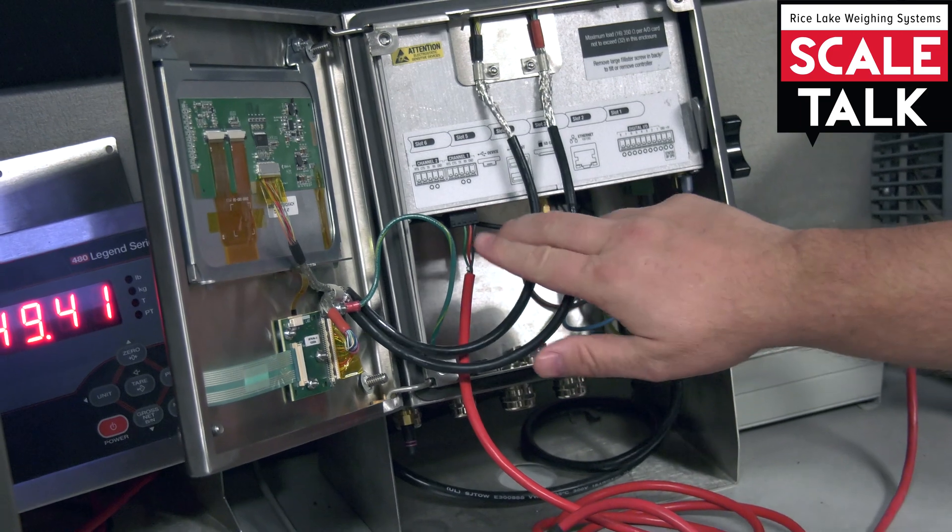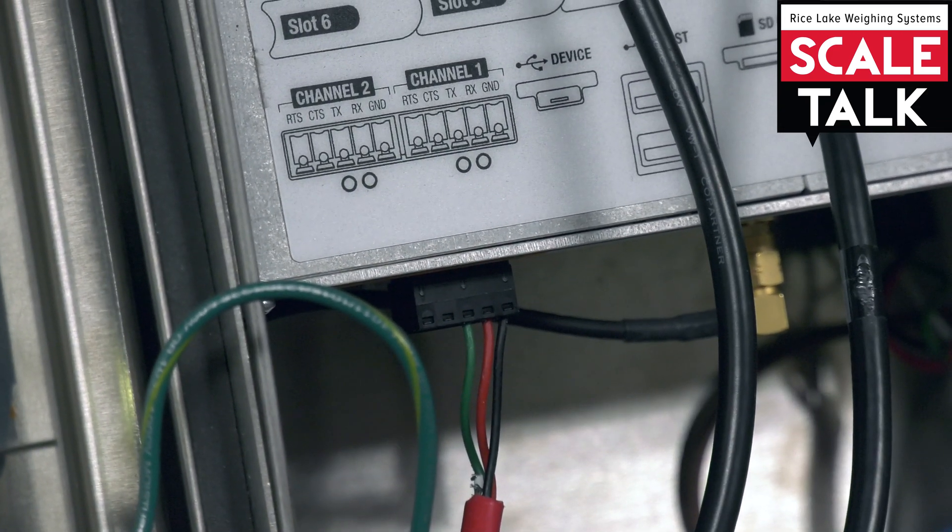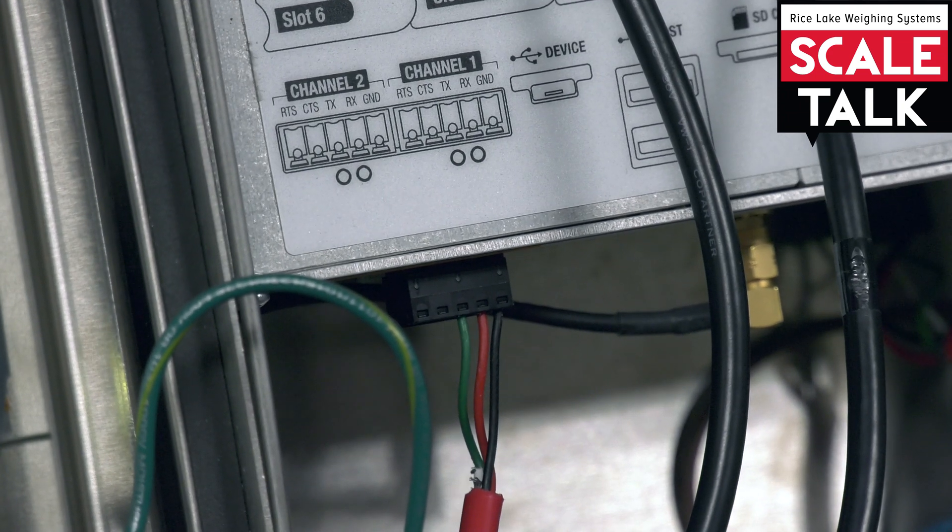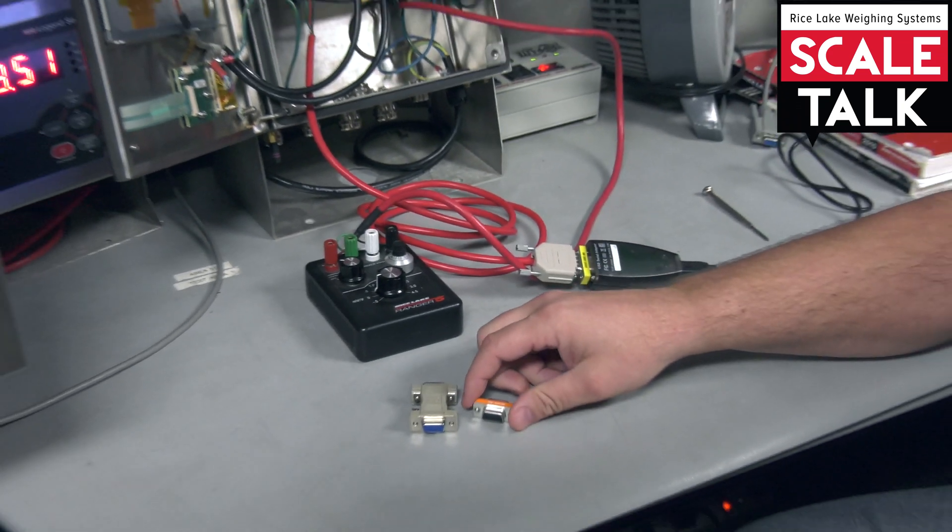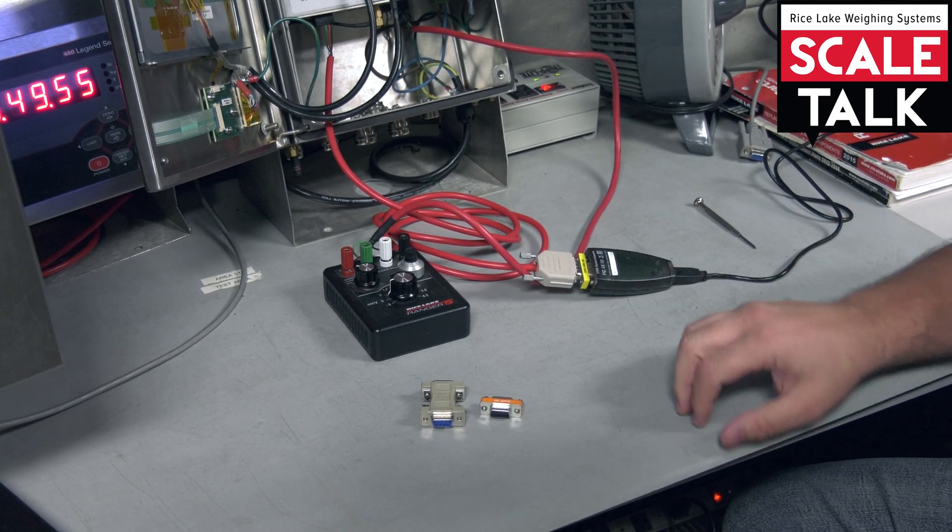We have connected it correctly here. So we have our ground, transmit, and receive going to our ground, receive, and transmit. In between is just another gender changer. So there are varying different ones.